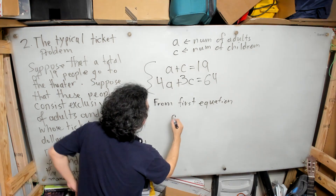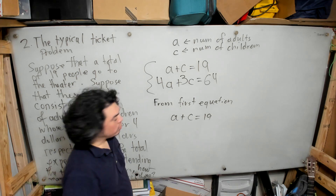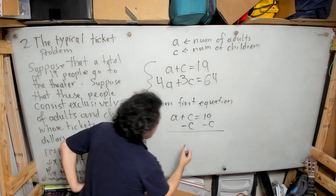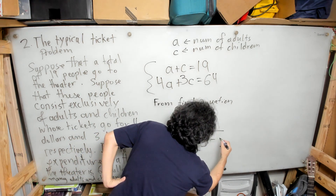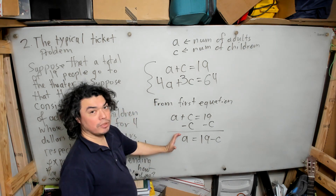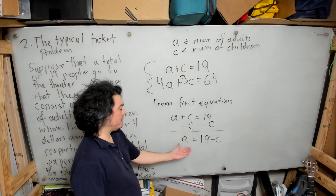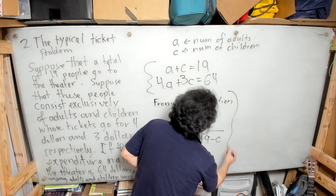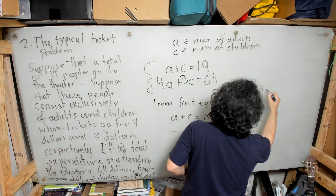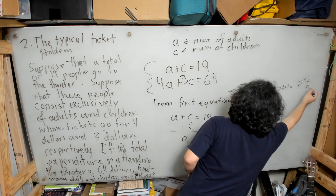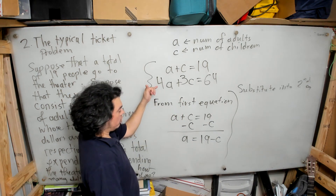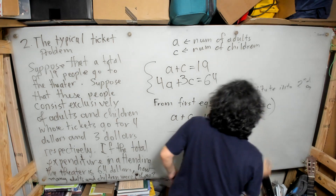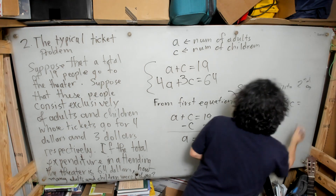From the first equation, a plus c equals 19. I want to get 'a' by itself, so I subtract c from both sides and get a equals 19 minus c. This gives us a relationship between a and c that allows us to replace 'a' in the second equation. Substituting into the second equation: four times (19 minus c), plus 3c, equals 64.